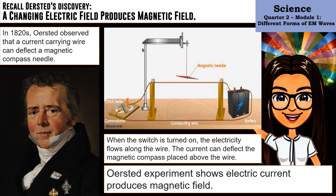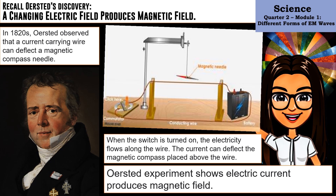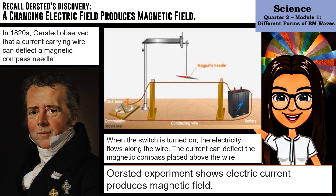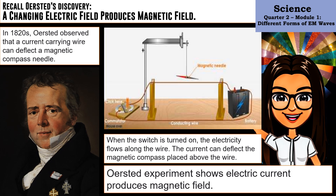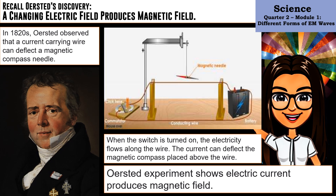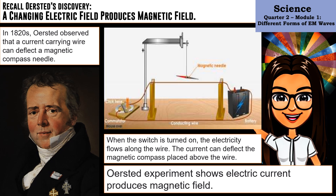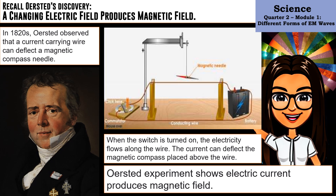This figure is similar to what Ersted did in his time. When the switch is turned on, the electricity flows along the wire. The current deflects the magnetic compass placed above the wire. Ersted's experiment shows that electric current produces a magnetic field.